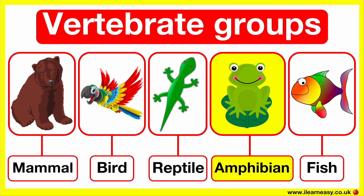Amphibians have damp skin. First, they use their gills to breathe, and then lungs. Amphibians lay soft eggs in water and their body temperature changes; therefore, they are cold-blooded animals.